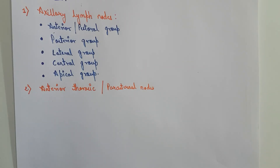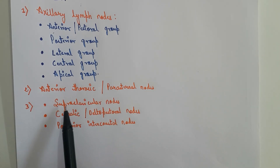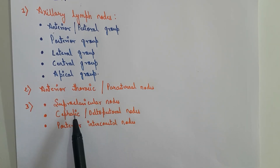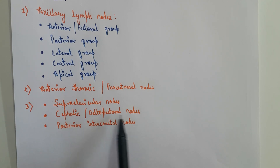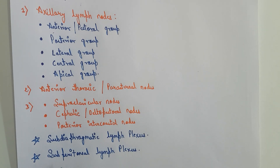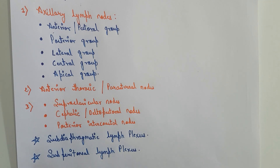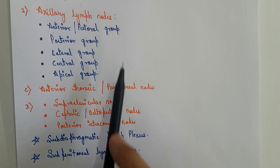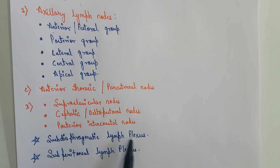We also have a few other lymph nodes: the supraclavicular lymph nodes, the cephalic — also known as the deltopectoral — lymph nodes, and finally the posterior intercostal lymph nodes. There are also two lymph plexuses into which some amount of lymph from the breast drains: the sub-diaphragmatic lymph plexus and the subperitoneal lymph plexus. So the lymph from the breast drains into the following lymph nodes and lymph plexuses.